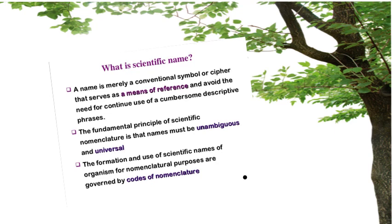Now here we have some characteristics of species' scientific names, because these names are related to binomial nomenclature. Species scientific names are binomials — meaning they possess two names composed of two words: one related to the genus and the other related to the species.